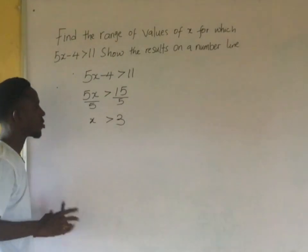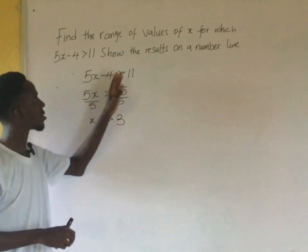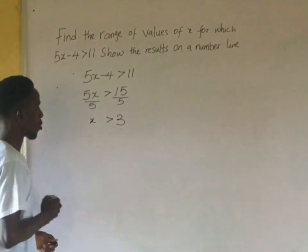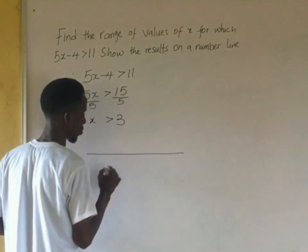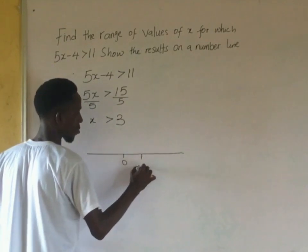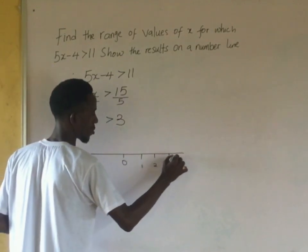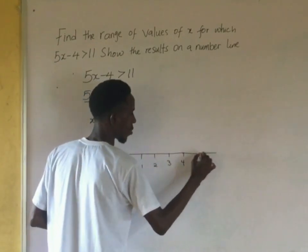Now the answer is x is greater than 3. The challenge is how to represent it on the number line. Your number line is something like this. Let us assume this is my 0, 1, 2, 3, 4, and it continues to whatever number.